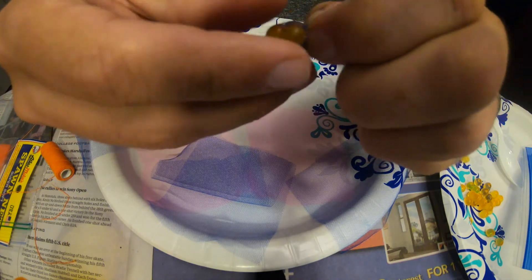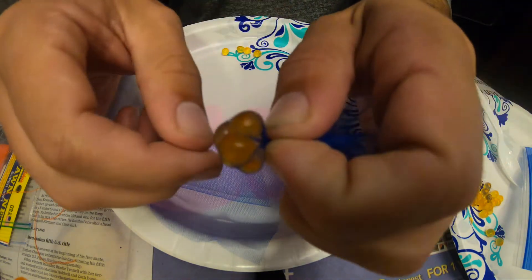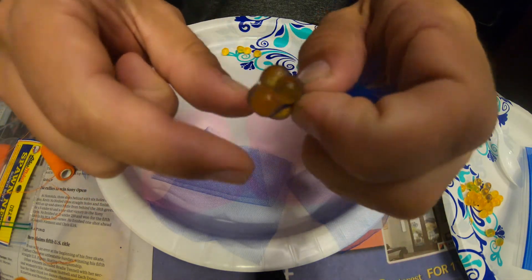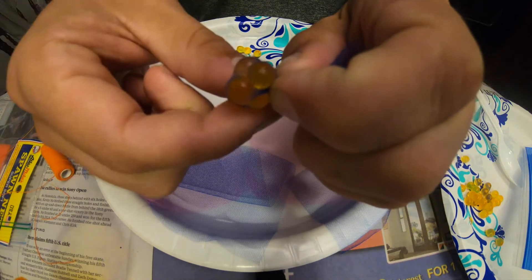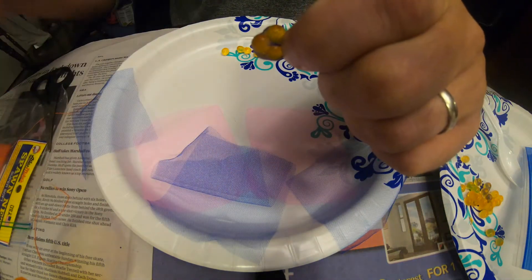And give that netting just a decent twist. You don't need to twist it too much. You twist it too much, you put too much tension on it and you might break your eggs if they're too soft. So I just give it a small little twist there and that's what we got.